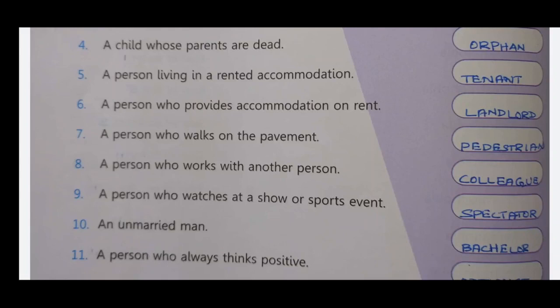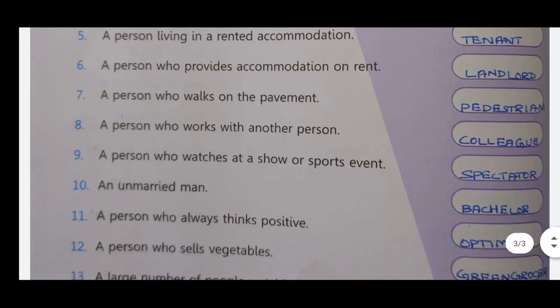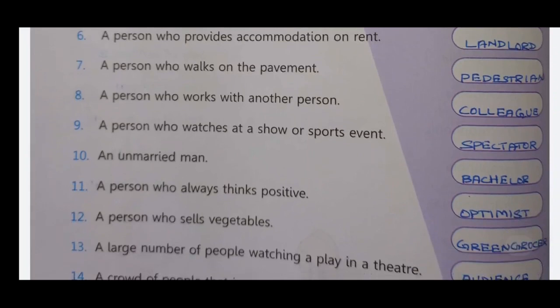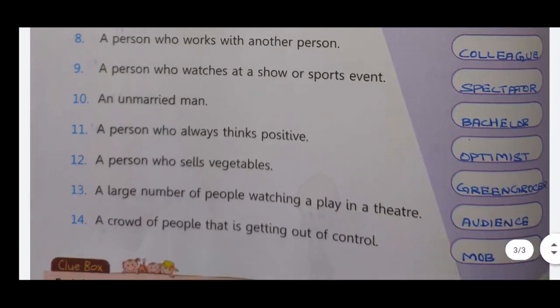A person who works with another person: colleague. A person who watches at a show or sports event: spectator. An unmarried man: bachelor. A person who always thinks positive: optimist. A person who sells vegetables: greengrocer.